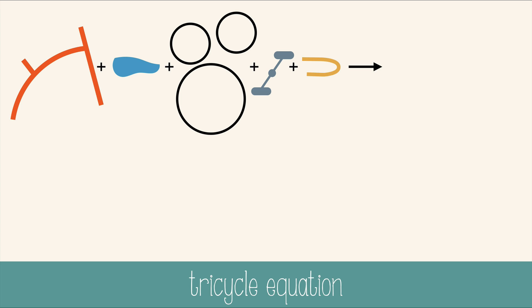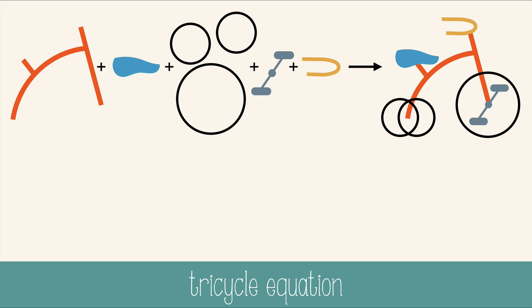And a handlebar. We could treat this like a formula and give these symbols, and our built tricycle has a formula of FSW3P2H. It's probably easier just to say tricycle. With this information we can create some conversion factors to help us solve logistical problems.